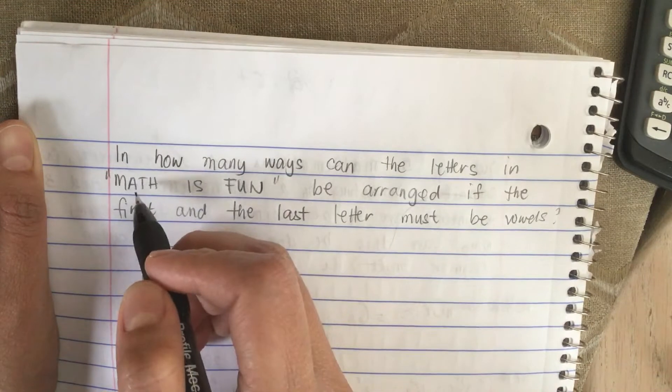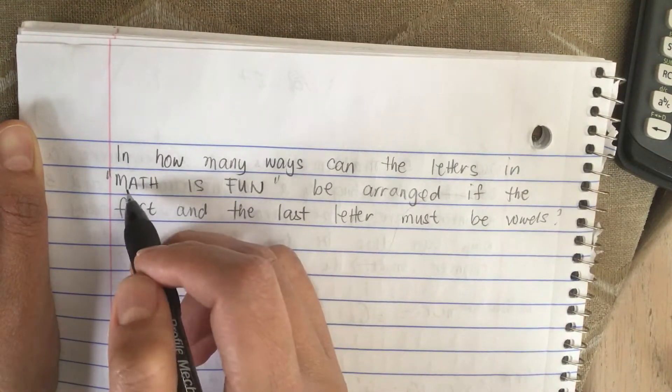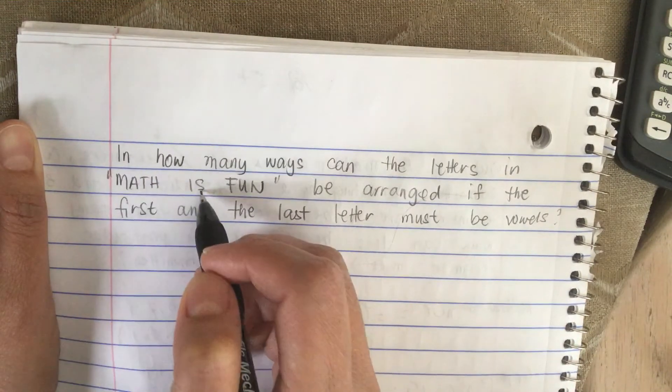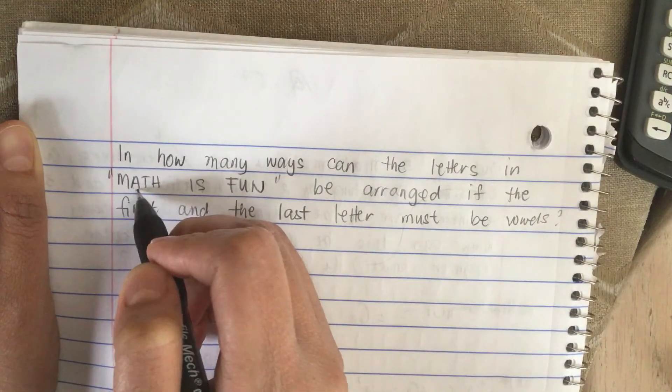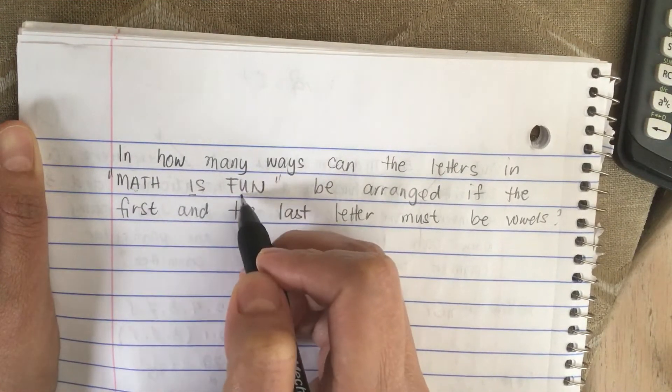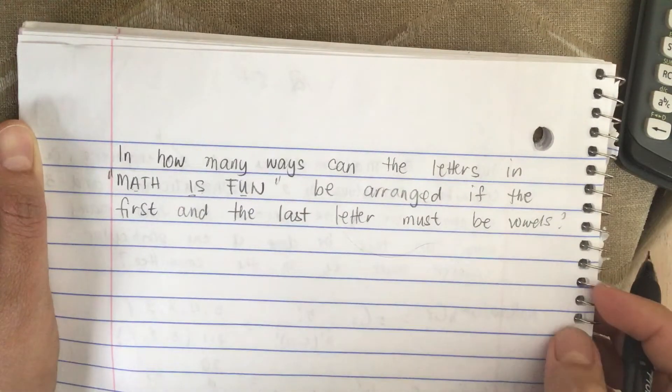So in this word, MATH IS FUN, the vowels are A, I, and U. So there are three of them.